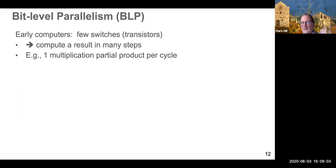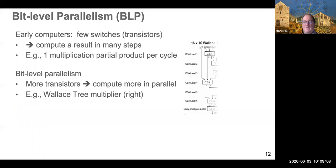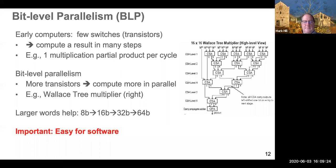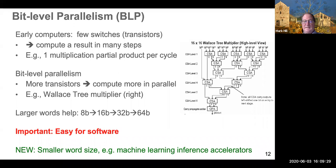So bit-level parallelism was the fact that you started out with devices where it might take a long time to do a multiply with a partial product every cycle, but if we have more transistors, we can do things like Wallace trees and get results very quickly at a cost of more transistors, which fortunately Moore's Law was giving us. Larger words help, but you can't do this forever, and the important thing is this is relatively easy for software. I should note that there's a reversal of this trend of bit-level parallelism, at least in machine learning inference accelerators, where we're going to smaller word sizes, or even analog.